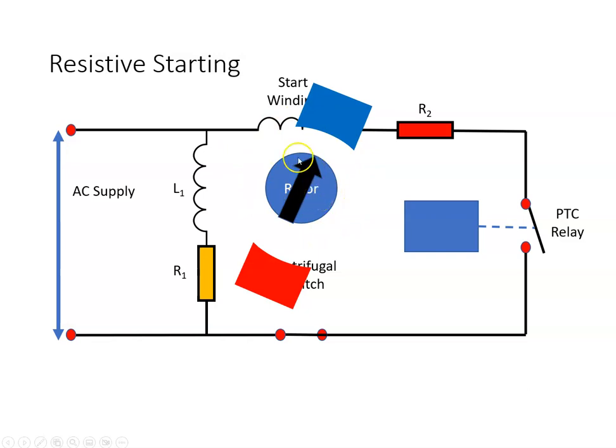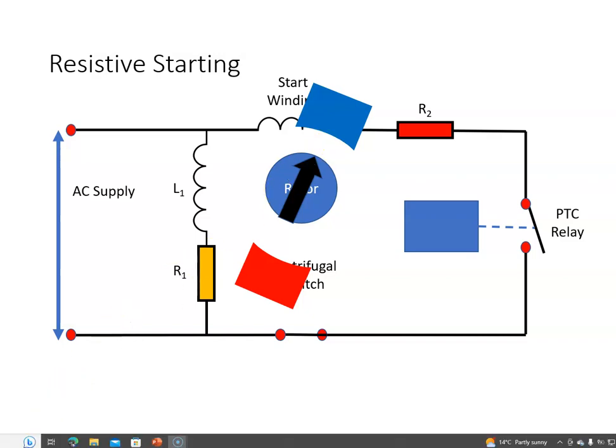Okay, so that's how a resistive start works. You're just varying the current in one branch, it gives a phase angle difference in current to the two windings, and that just kicks it off slightly to the right or to the left depending on which way it's wired, and that's how it gets to start.